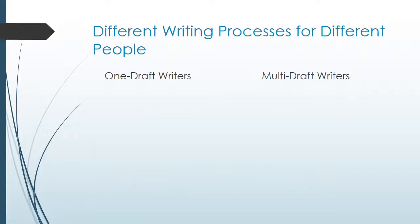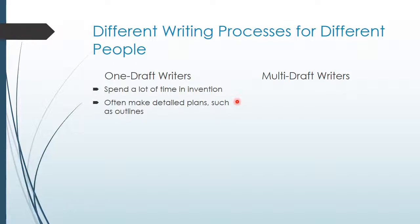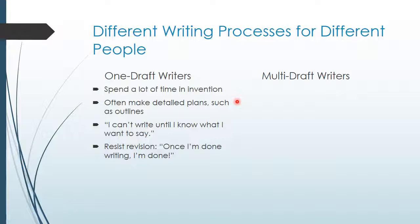Not everyone has the same writing process — there are different writing processes for different people. One way we can talk about that is with one draft writers and multi draft writers. Think about which of these describes how you typically compose. One draft writers spend a lot of time in invention and planning — they often make very detailed plans such as formal outlines. They'll say things like 'I can't write until I know what I want to say,' and they resist revision. They may seem to be procrastinating, but what they're actually doing is thinking about what they want to say.